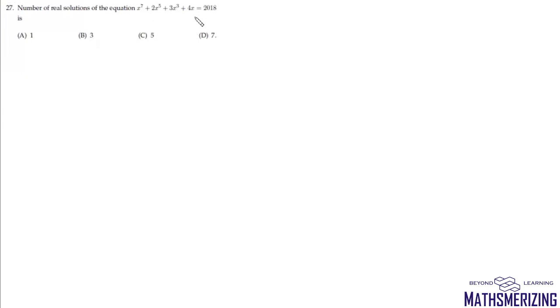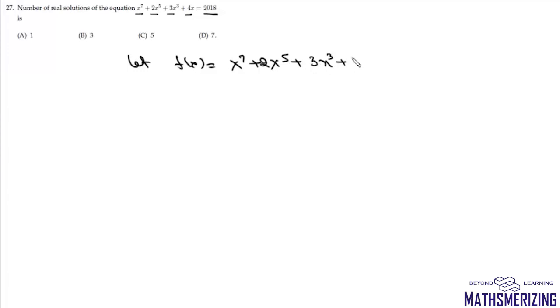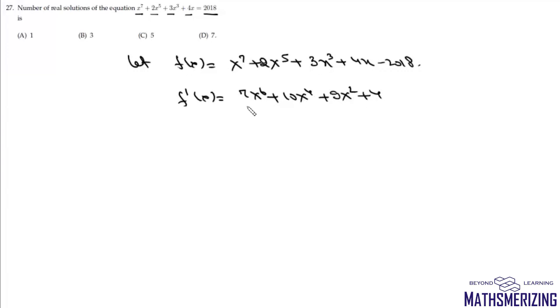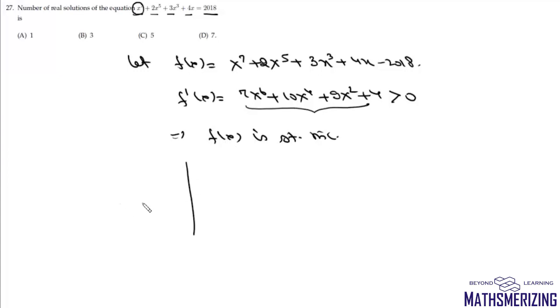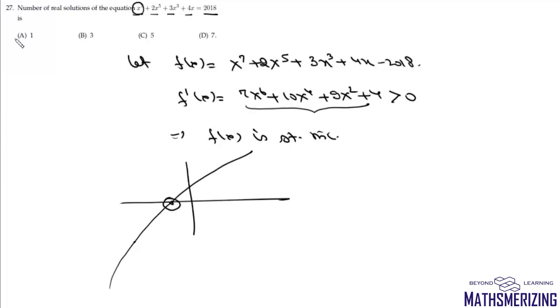Question 27: find the number of real solutions of x⁷ + 2x⁵ + 3x³ + 4x = 2018. Define f(x) = x⁷ + 2x⁵ + 3x³ + 4x − 2018. Then f'(x) = 7x⁶ + 10x⁴ + 9x² + 4 > 0 always, so f is strictly increasing. Since f is continuous, strictly increasing, going from −∞ to +∞, it crosses zero exactly once. There is exactly 1 real solution. That's option A.